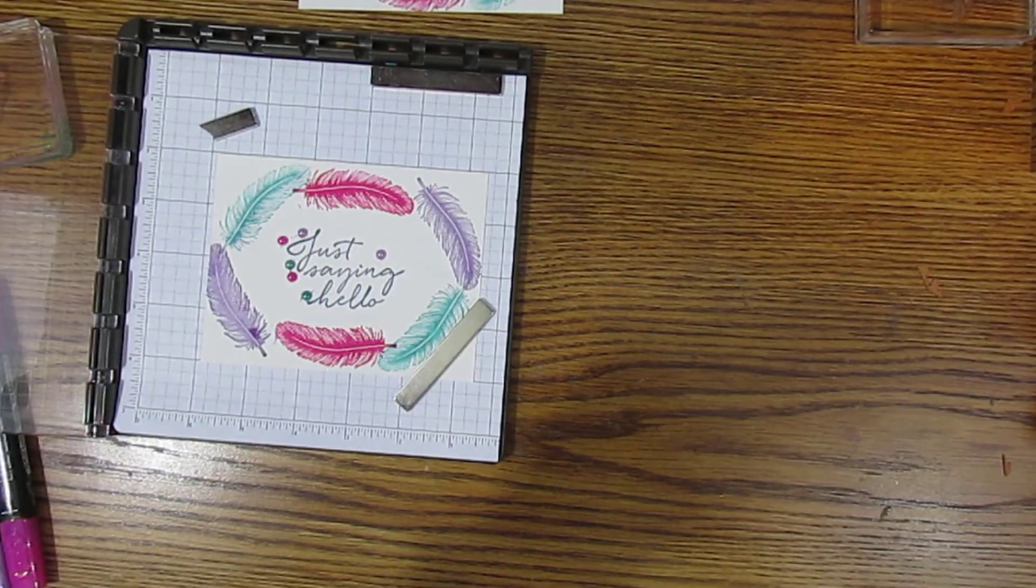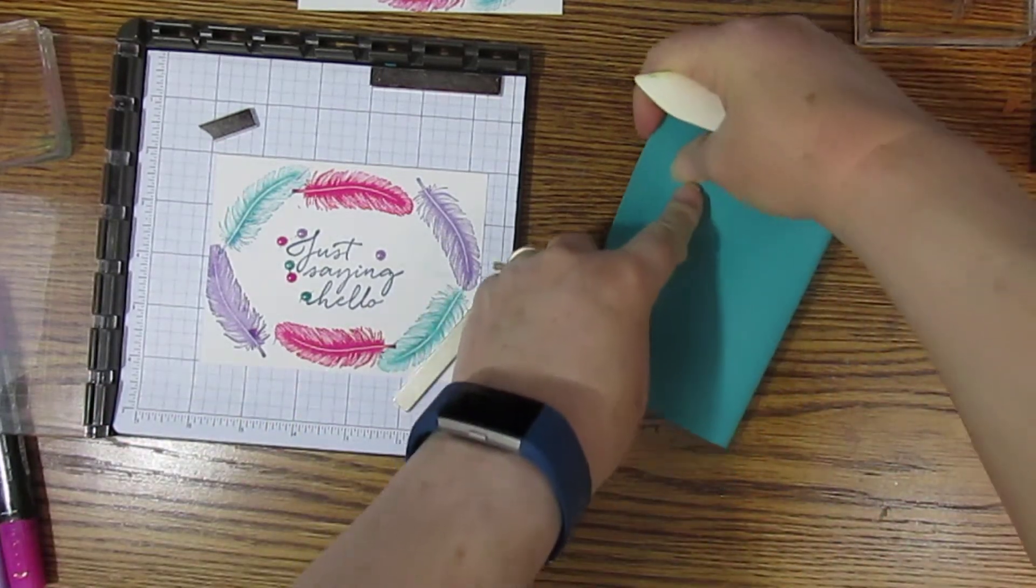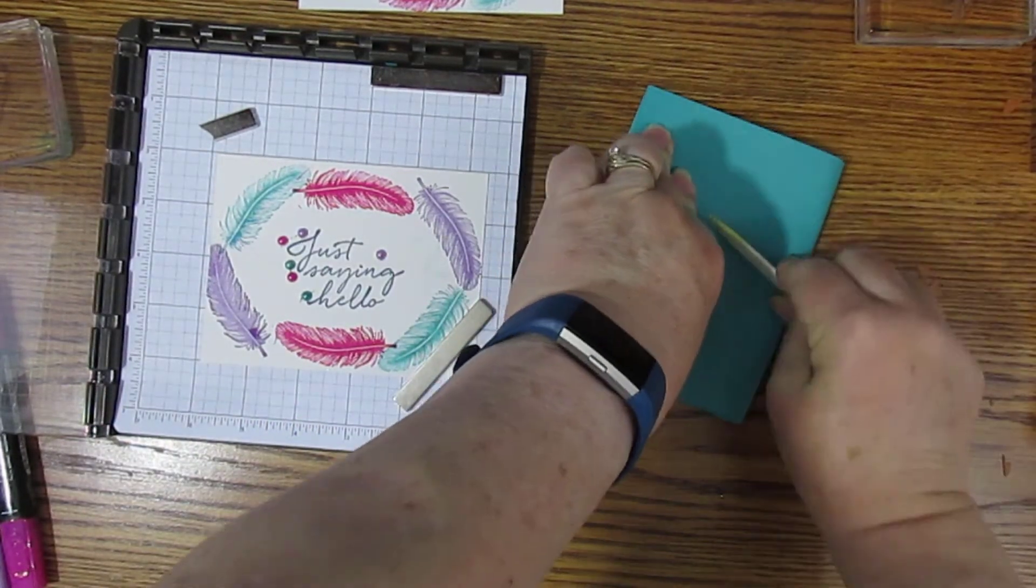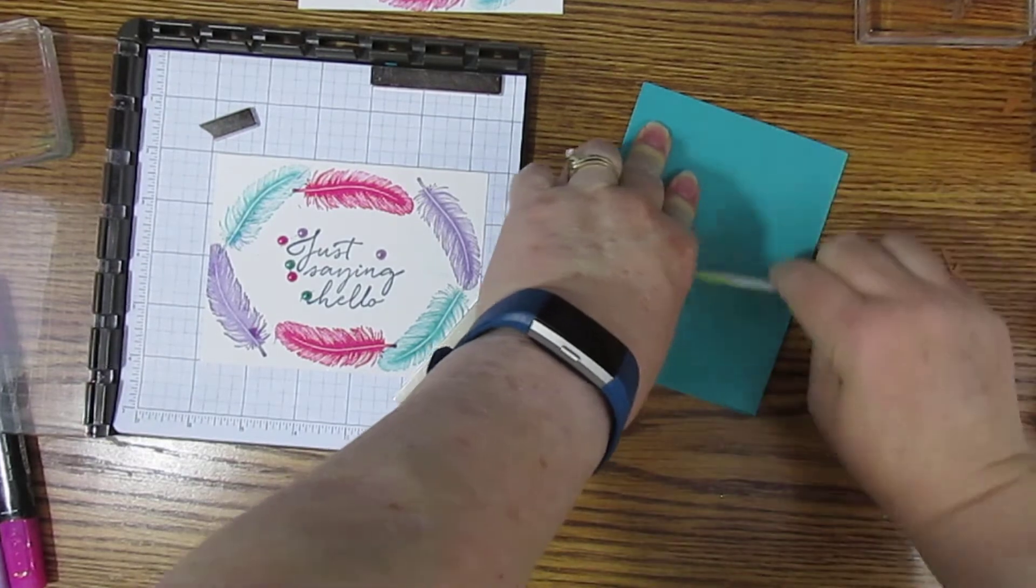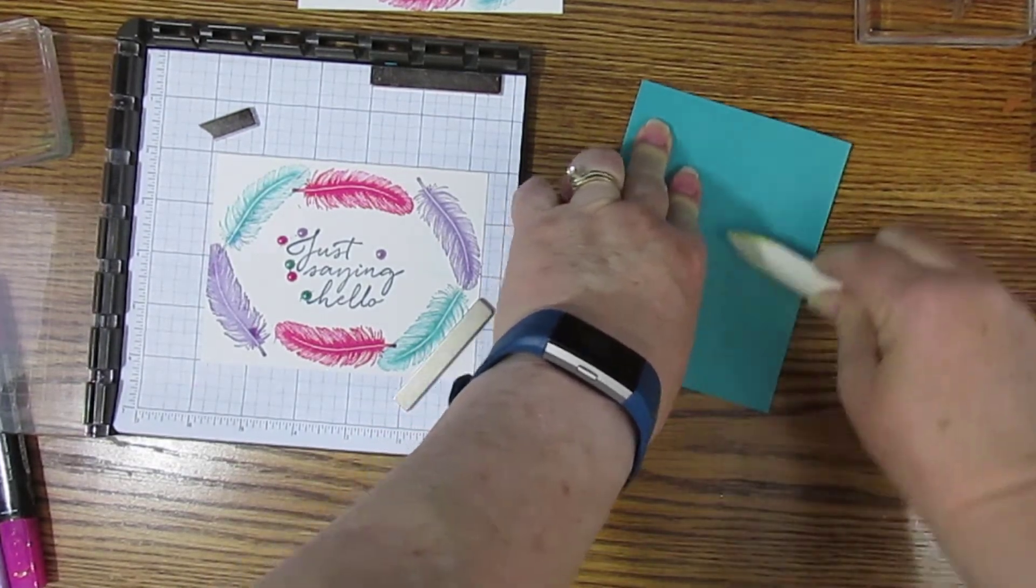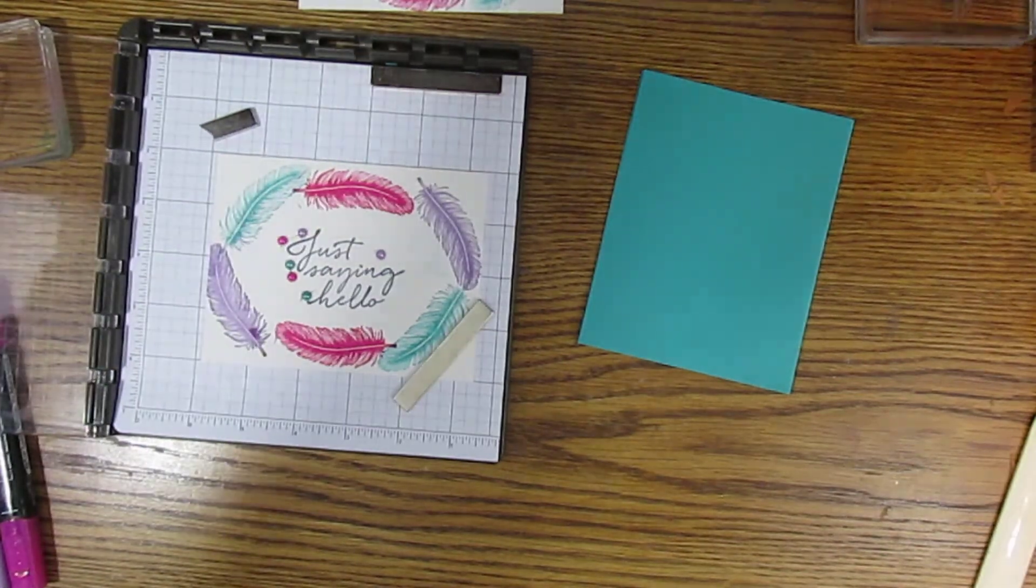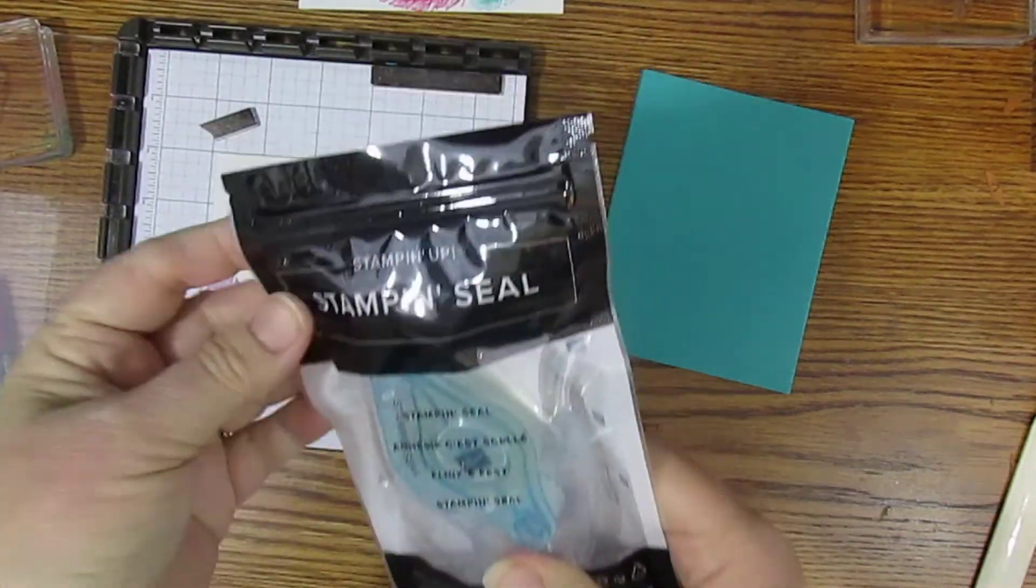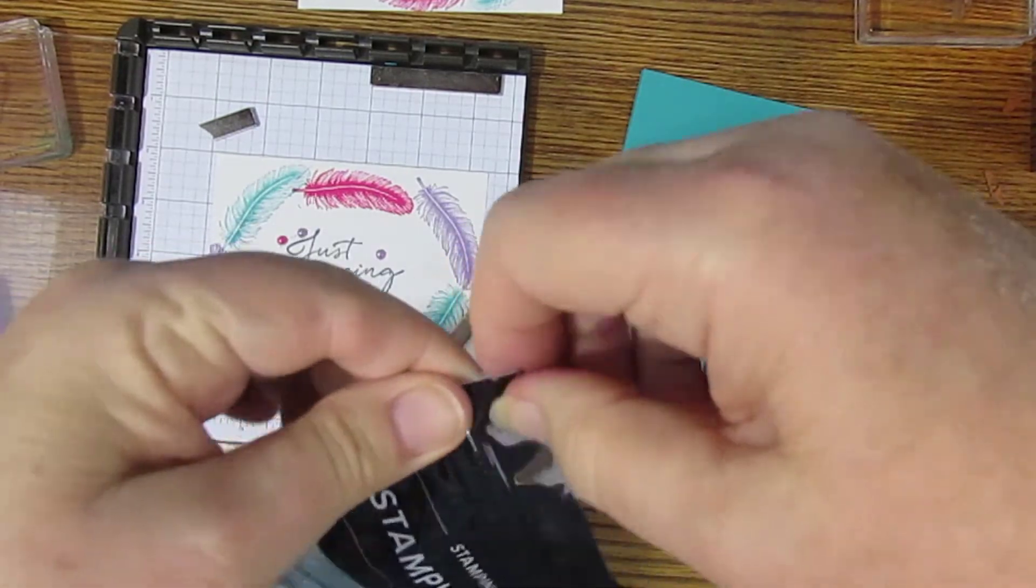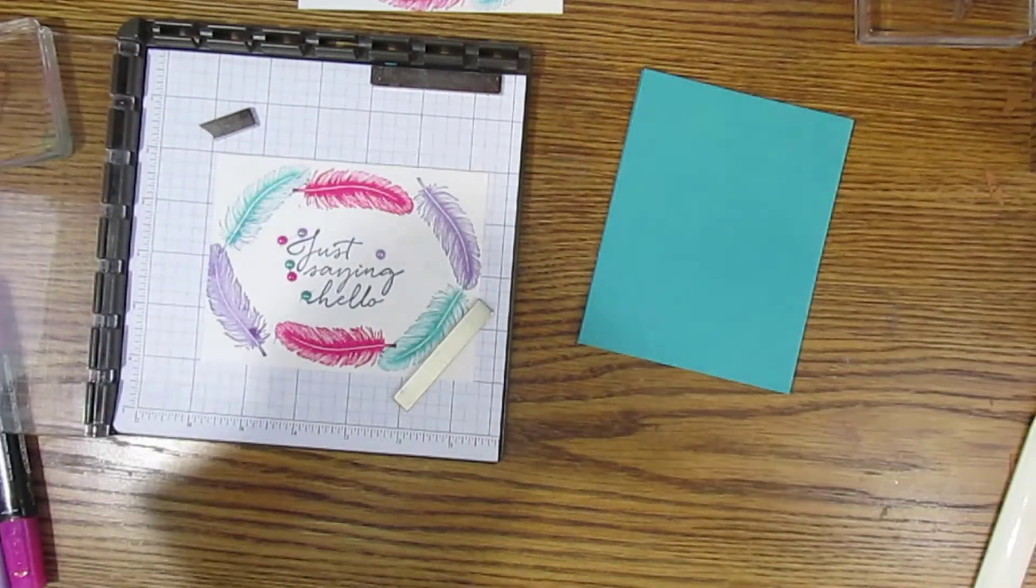Okay, we are going to make our Bermuda Bay card base. You can use any of the four colors you wanted. I'm going to try out my brand new stamp and seal. It comes in this package and has little notches for you to pull and tear.